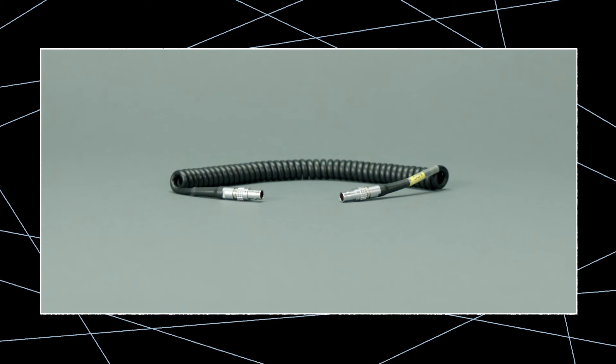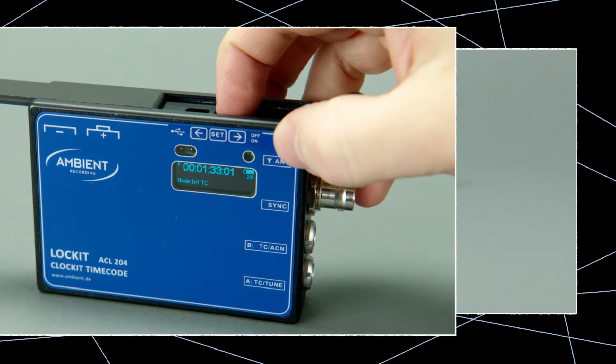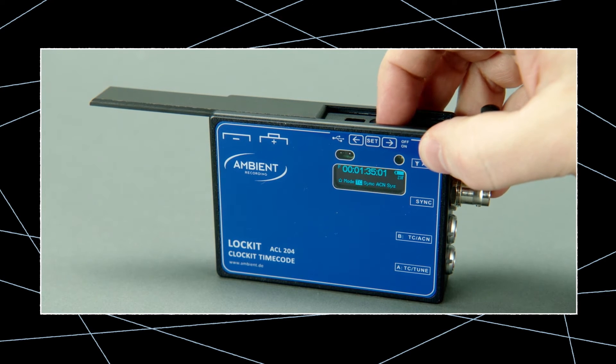Note that if you're using a bi-directional cable, like the TC in-out, you will need to go back to the TC menu, go to Jam, and then choose Once. Otherwise, the camera might re-jam the locket once they are connected.